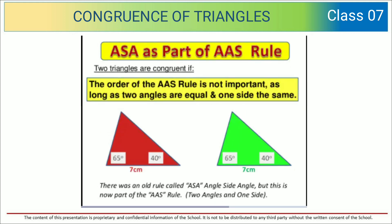Two triangles are congruent if the order of the AAS rule is not important, as long as two angles are equal and one side the same. There was an old rule called ASA, Angle-Side-Angle, but this is now part of the AAS rule.